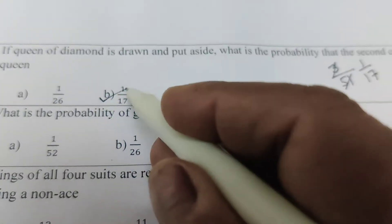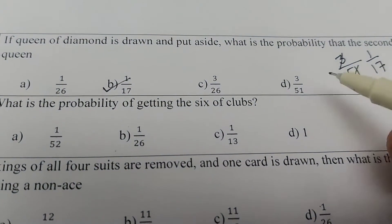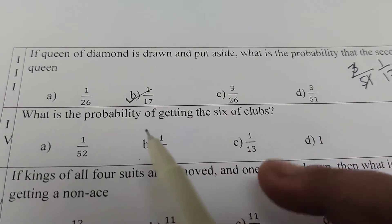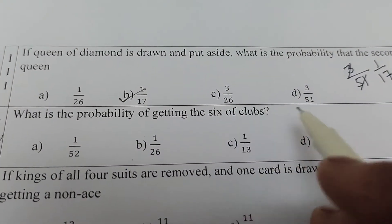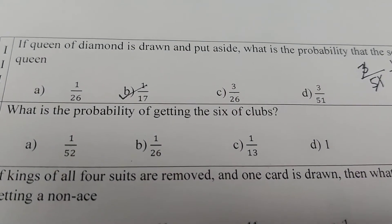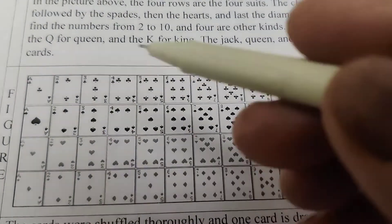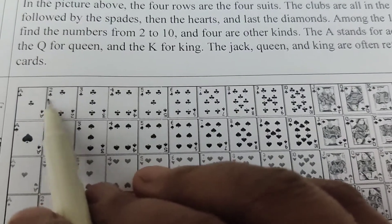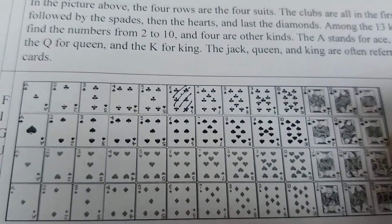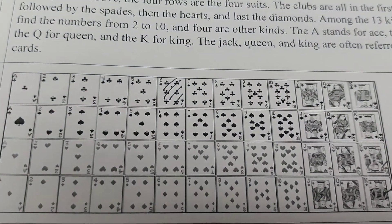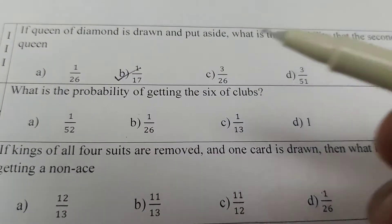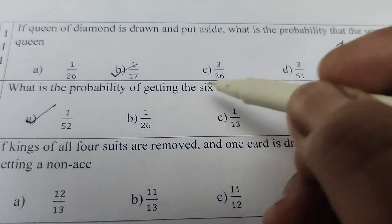Note that 3 by 51 is not the final answer because probability is always written in its lowest form — giving 1 by 17. Question 4: What is the probability of getting the six of clubs? Looking at the figure, the club cards are shown, and the six of clubs is only one card. Total cards is 52, so the probability of getting the six of clubs is 1 by 52.